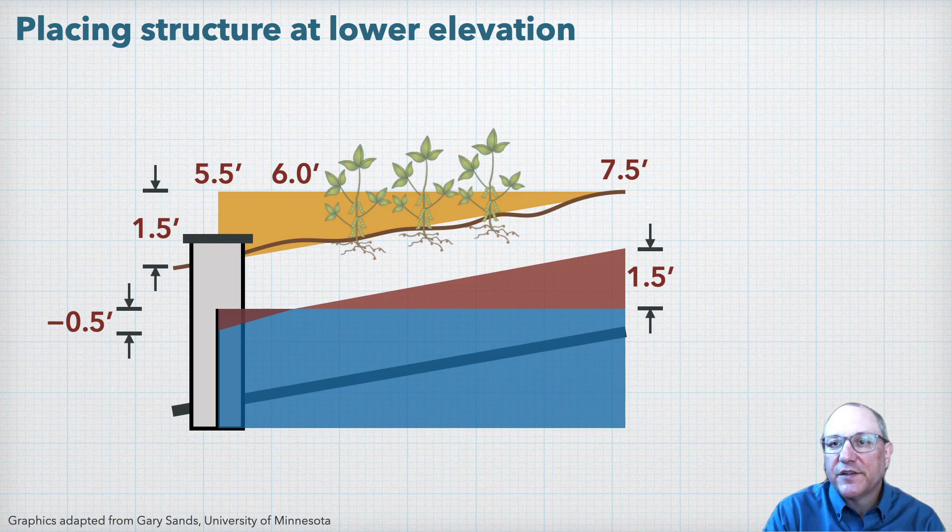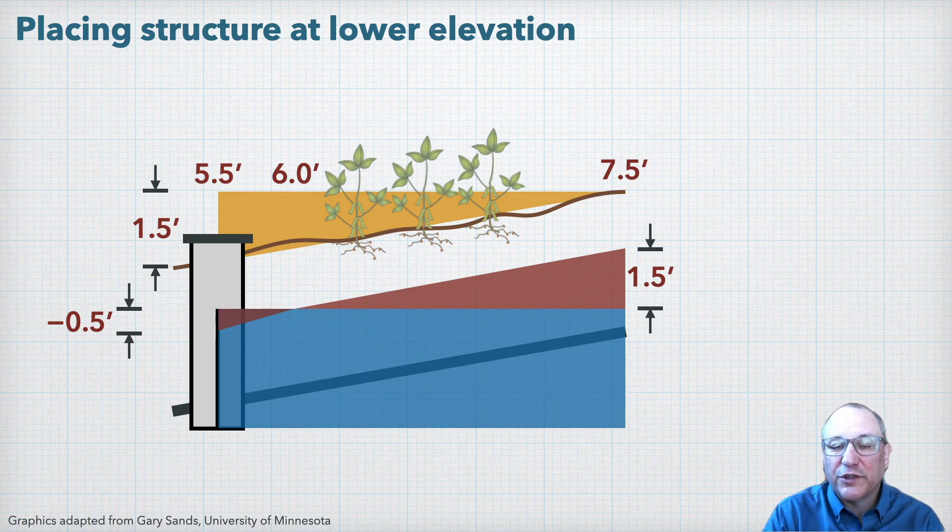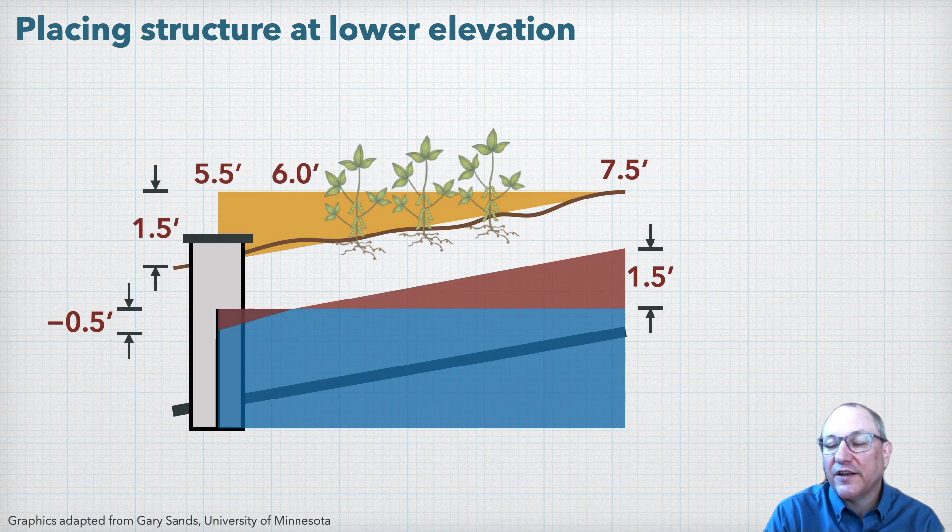So we can go back and redesign the system so that the control structure is at that 42-foot bottom contour, or perhaps the farmer will decide that for that small of an area, they're willing to accept a higher water table at times, for the convenience of having that control structure at the field outlet.